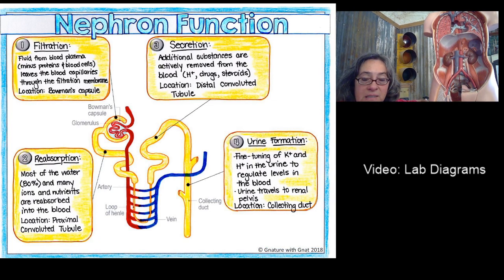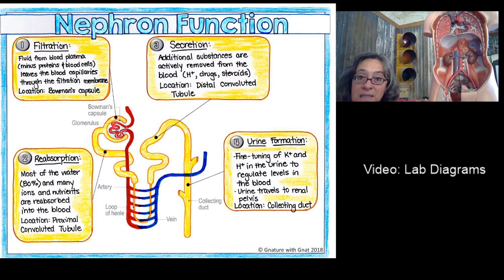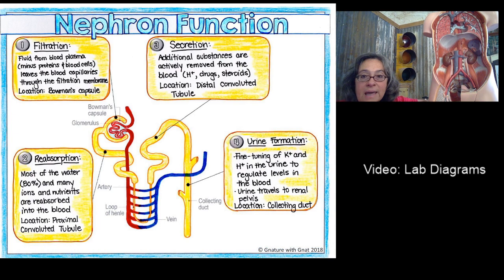This also includes glucose — too much glucose can damage the kidneys. That's why people with diabetes, if they don't control their blood sugar, will have too much sugar that the kidneys are trying to eliminate. The last process, taking place in the collecting duct, is urine formation. This is when urine is actually made — it's the fine-tuning of potassium and hydrogen in the urine that helps regulate blood levels. From here, the urine travels to the renal pelvis and then to the bladder.